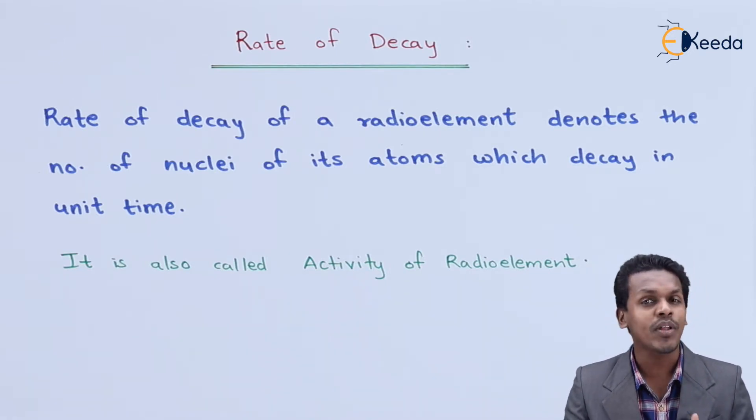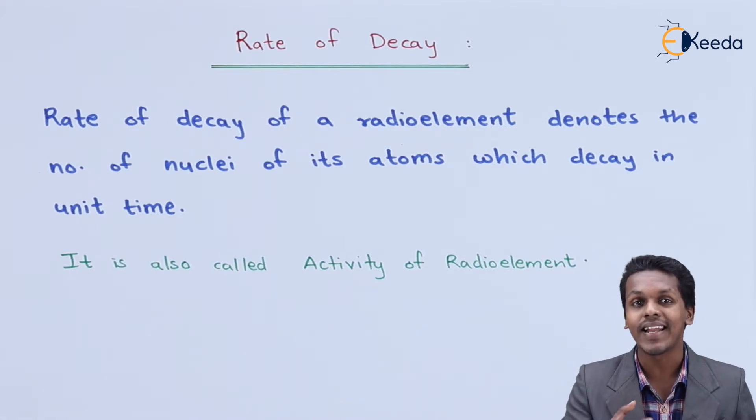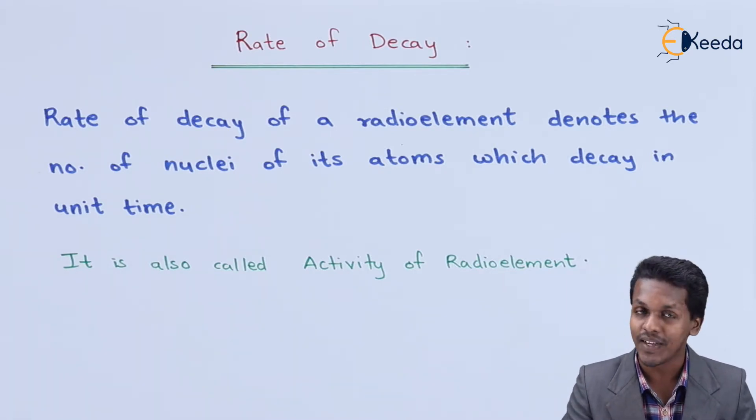That means a particular element in which there is a decay of the nuclei with respect to time. That is known as rate of decay and it can be expressed with the following equation. Now let me discuss that.